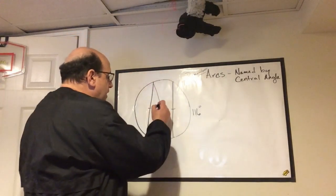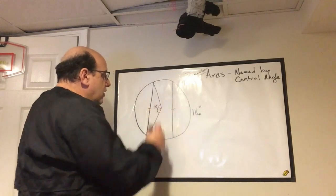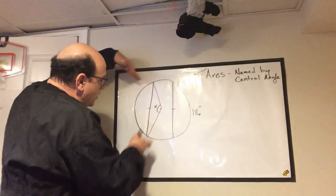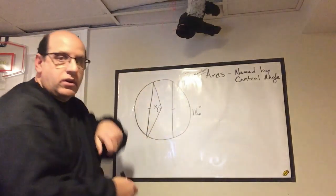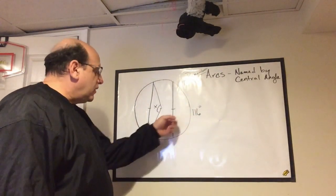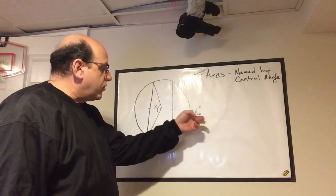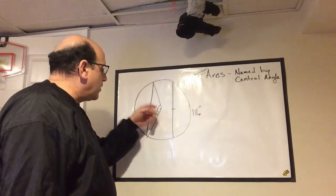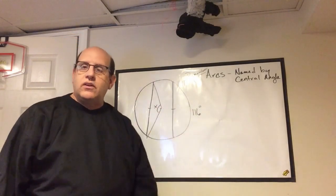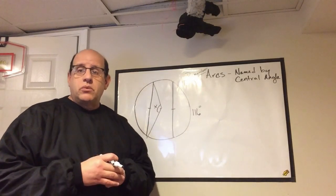Therefore, this angle right here—this x that they're looking for—is the central angle that creates this arc. And if this arc is 116 and these two chords are congruent, you can assume that this central angle is 116 degrees. That's really all there is to number two.